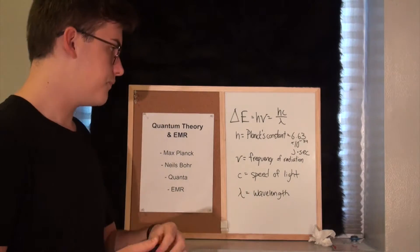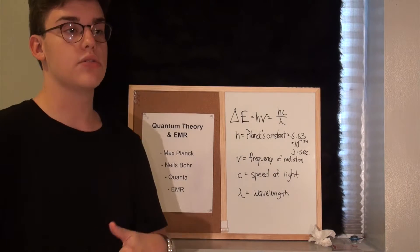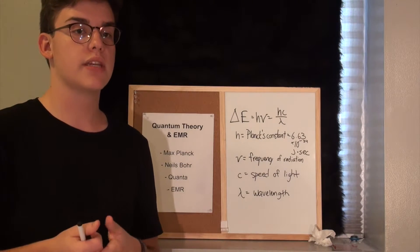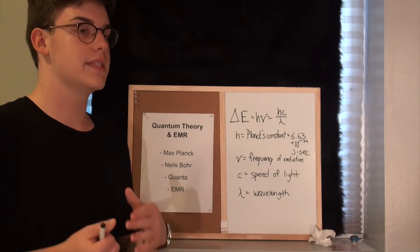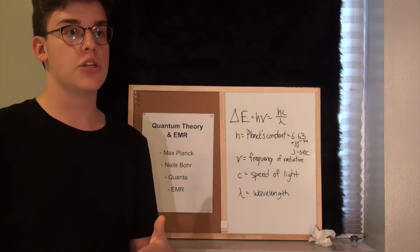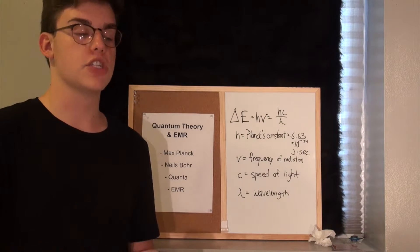So let me go through and explain each unit. H is equal to Planck's constant, which is equal to 6.63 times 10 to the negative 34th power joules times seconds. The frequency of radiation, which is measured in hertz, or seconds to the negative first power.